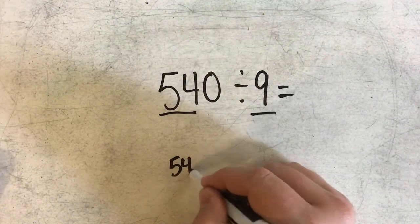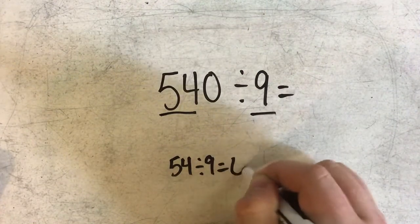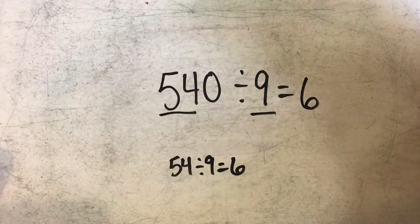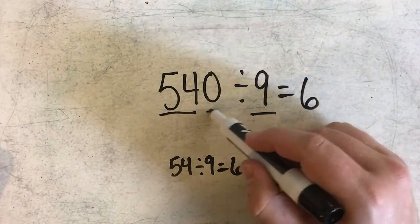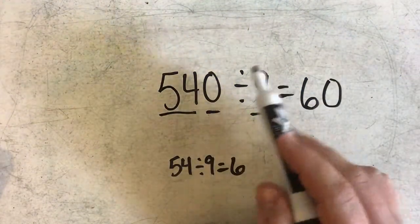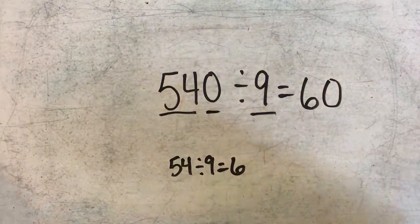I know that 54 divided by 9 is 6, so I'm going to include 6 in my answer. But I also need to include a zero in my answer. So 540 divided by 9 is 60.